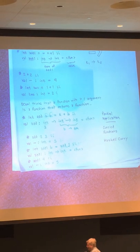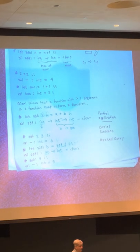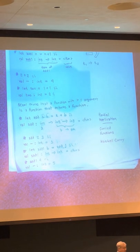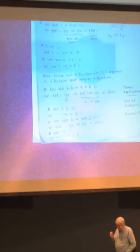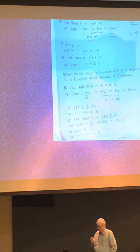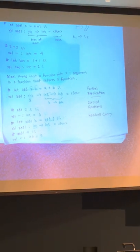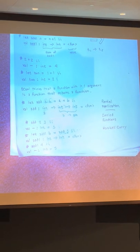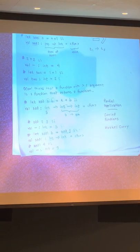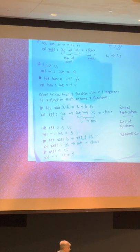Curry wrote a book called Combinatory Logic, where he basically shows all sorts of cool things that you can do with what are, in our terms, essentially partially applied functions. And computer scientists have basically stolen a lot of things from Curry to use in functional languages. I'd say we borrowed them, but we don't actually intend to give them back. So we'll say we stole them.